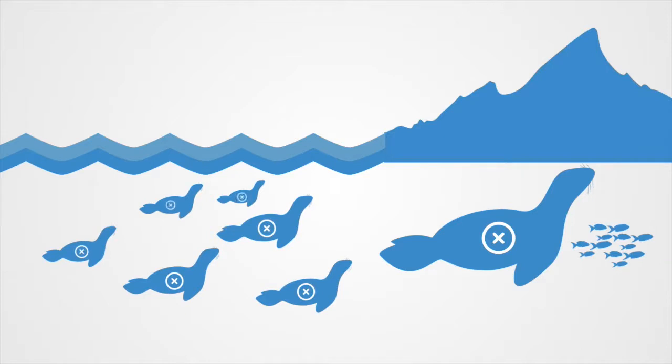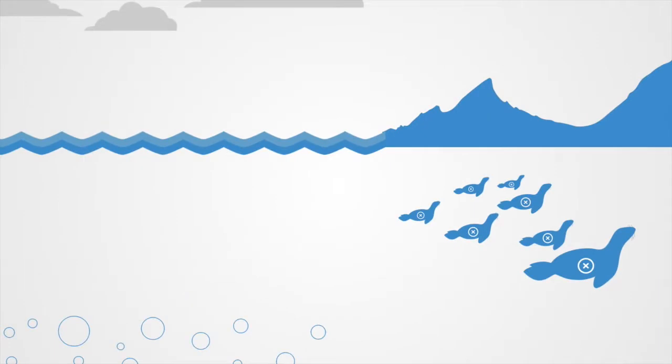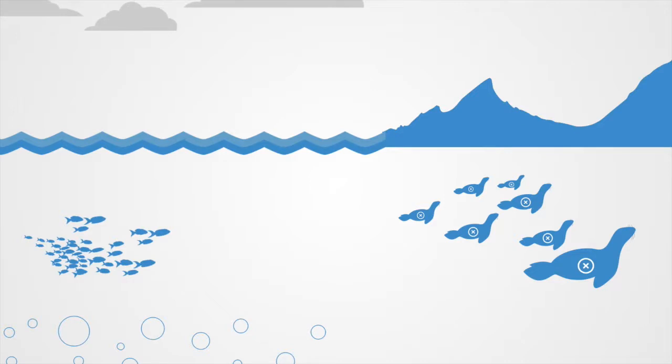This successful defector strategy would then reproduce, creating more defectors, at which point we might say that this defecting strategy is superior and will dominate others. But of course, over time we will get a tragedy of the commons situation emerge. As not enough seals are going out fishing, stealing fish will become a less viable strategy to the point where they die out altogether, and those who are going fishing may do well for themselves again.